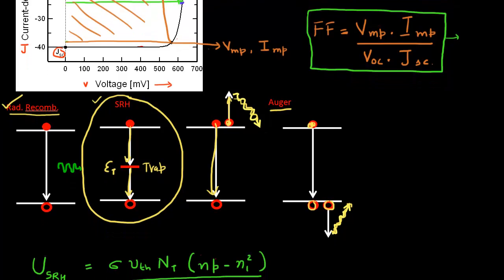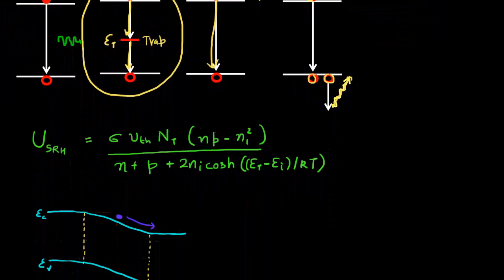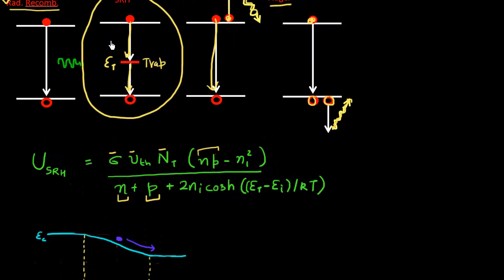The Shockley-Reed-Hall recombination is given by a formula where it is proportional to the number of traps, the capture cross section of the traps, and the thermal velocity. In terms of carrier dependence, it depends on the product NP in the numerator, and in the denominator it also has the concentration of electrons and holes. It also depends upon the position of the trap energy level — recombination is maximum when this trap energy level is located right at the center of the band gap, or close to the intrinsic energy level.